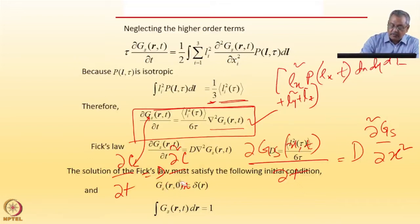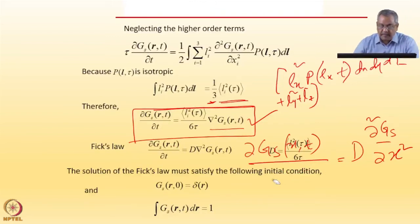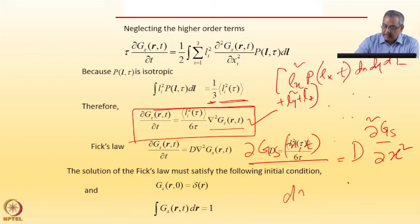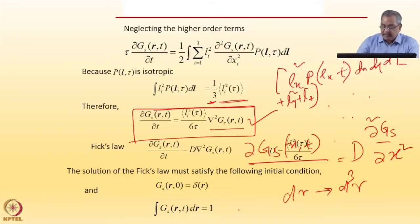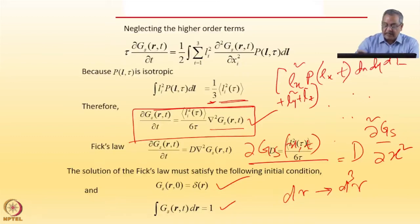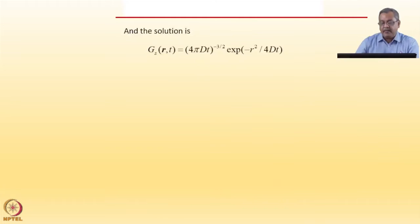The solution of Fick's law must satisfy basic constraints. First, at t=0 the self-correlation function is a delta function δ(r), because we know the particle starts from some point which we call the origin. Second, Gs(r, t) integrated over all space d³r must equal one, because the physical significance is that the particle has to be somewhere at time t.